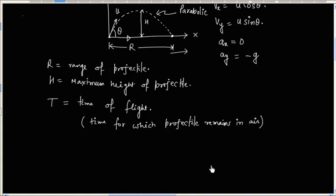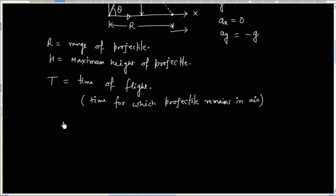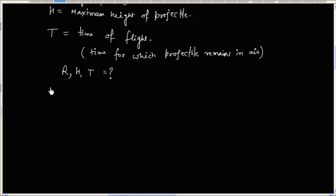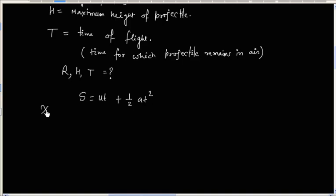Our target is to find expressions for range, maximum height, and time of flight. We will use the kinematical equation: s is equal to ut plus half at squared.